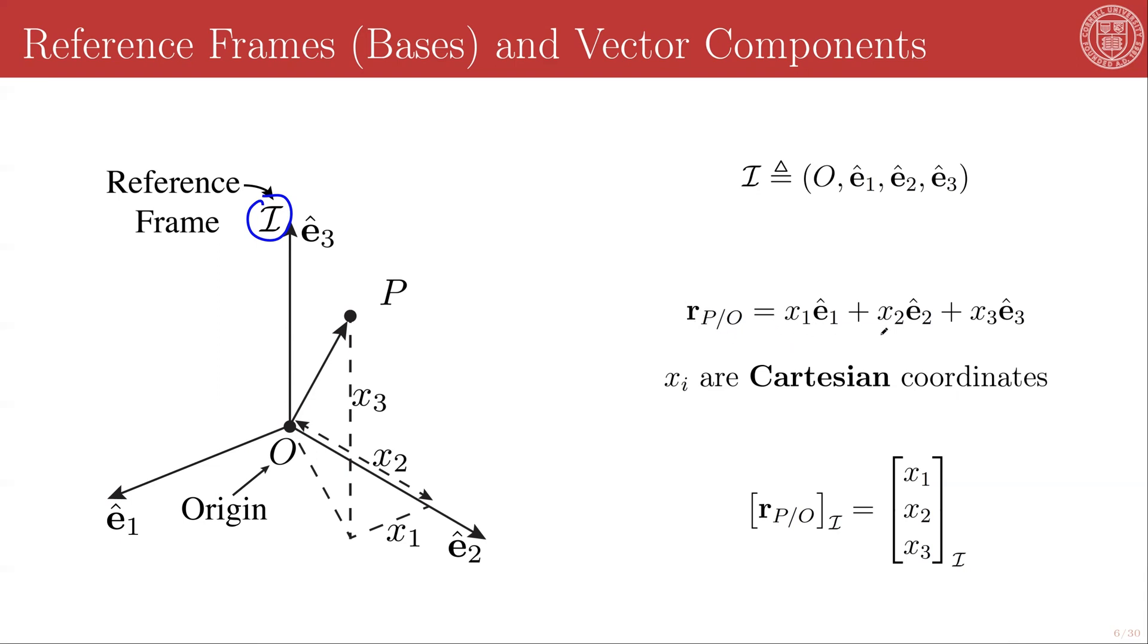I can split this into a weighted sum of my basis. And the weights I'll just call x_1, x_2, and x_3. And in this particular case, x_1, x_2, x_3 represent Cartesian coordinates, because they are the coordinates that map along the three unit directions defining the space.